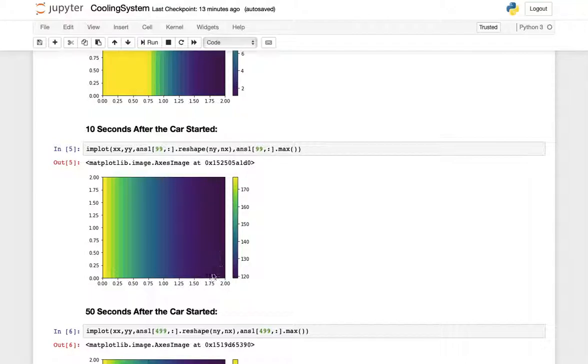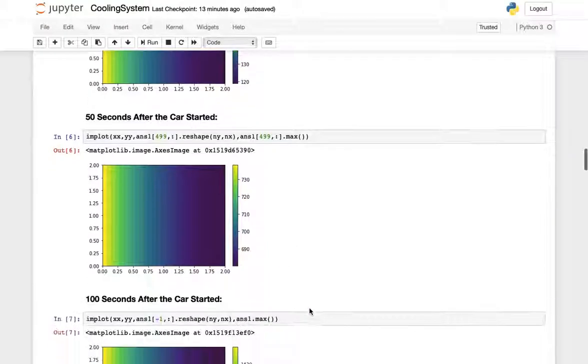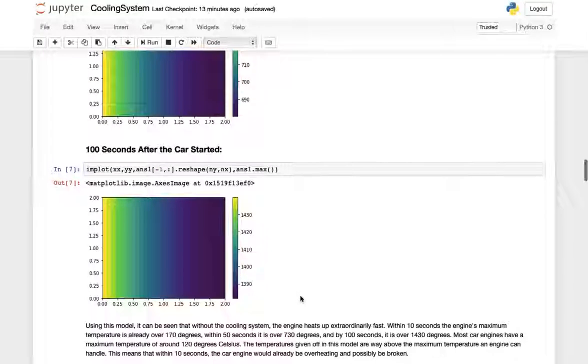After 50 seconds we're already past 730 degrees and our lowest point is a little bit less than 700 degrees. After this full 100 seconds we are past 1430 which is a crazy amount of heat. Our car engine broke way before this but it's interesting to see how this works.